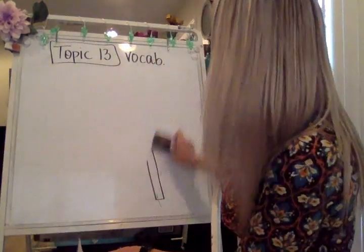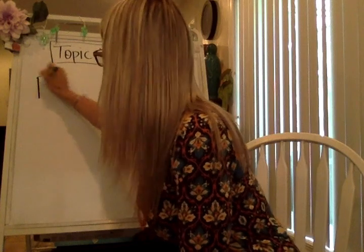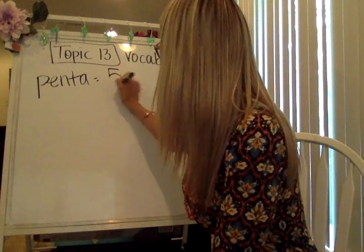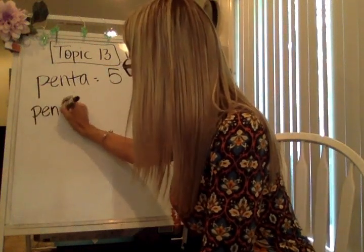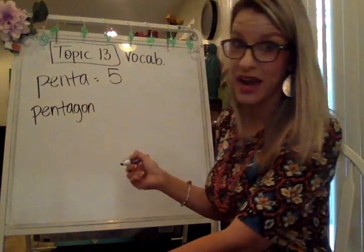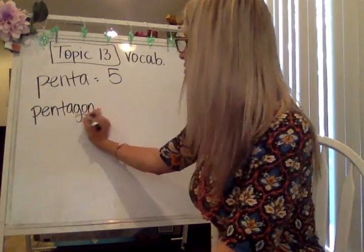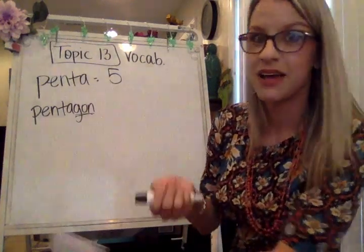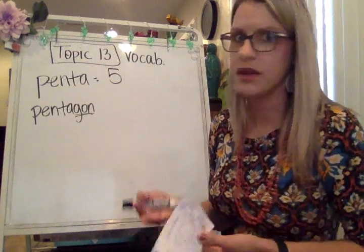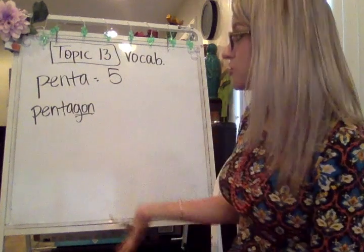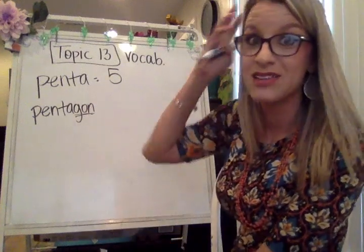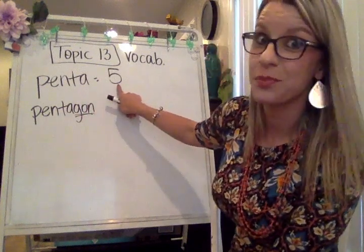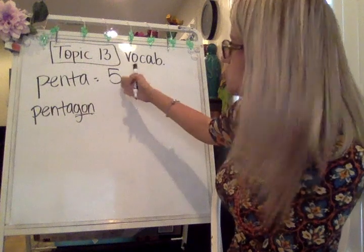The next word is pentagon. The prefix 'penta' means five. You'll notice that a lot of these shape names have the word 'gon' at the end — pentagon, hexagon, polygon, octagon, nonagon, dodecagon — and that ending tells you it's a shape. So if we're talking about pentagon, and the prefix penta means five, that just means it's a shape that has five sides.